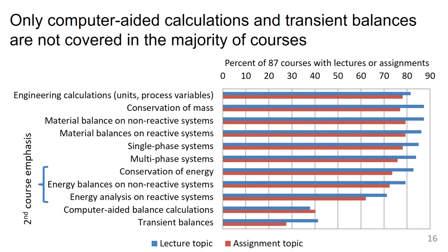This graph shows different topics in the textbook and whether they are covered as a lecture topic or an assignment topic in the course. The blue top bars show the percent of courses using them as lectures, and the red bottom bars show assignments. The vast majority of textbook topics are covered in the classes all the way through energy balances on reactive systems. Computer-aided balance calculations and transient balances are the only two topics not covered in at least half of the classes.